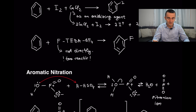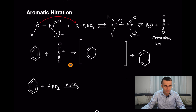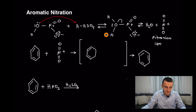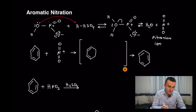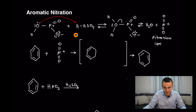For fluorine, you need to use the special reagent F⁺BF₄⁻, not fluorine directly as with other halogens, because fluorine is too reactive. The final product is the same — fluorination of the aromatic ring.